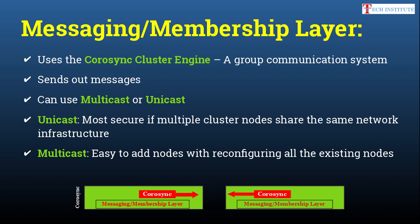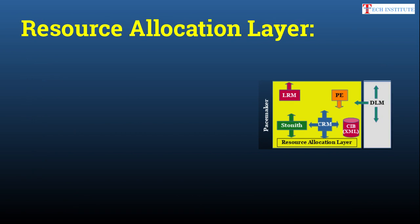If you are not that concerned about security or complexity, you can use multicast to configure communication between nodes. Also, Corosync, which is the main component of this messaging or membership layer, has a separate systemd service of the same name. So you can do 'systemctl start corosync', 'stop corosync', and so on — you can manage it with systemd.